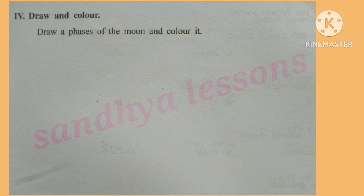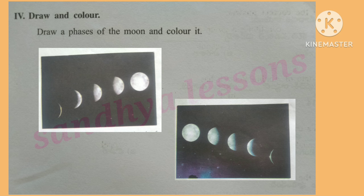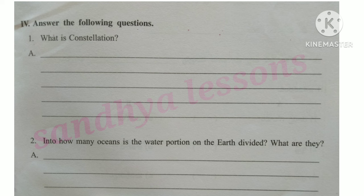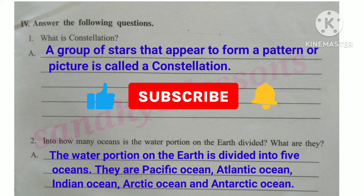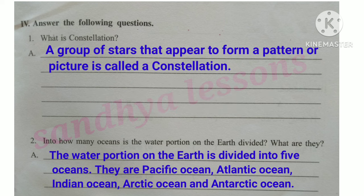Question 4: Draw and color the phases of the moon. Answer the following questions — What is a constellation? A group of stars that appear to form a pattern or picture is called a constellation. Into how many oceans is the water portion on the earth divided? What are they? The water portion is divided into 5 oceans: Pacific Ocean, Atlantic Ocean, Indian Ocean, Arctic Ocean, and Antarctic Ocean.